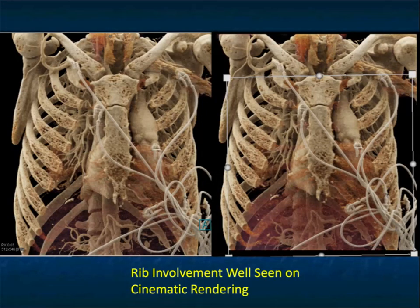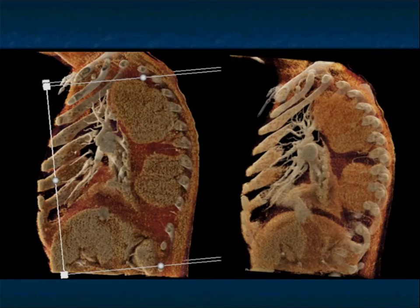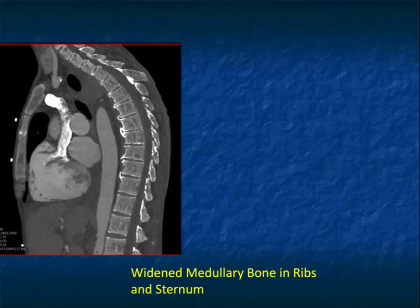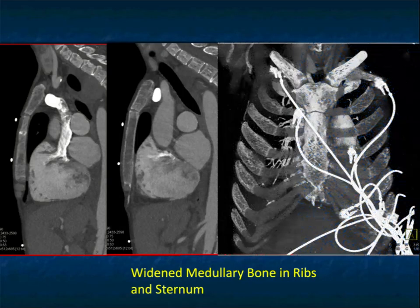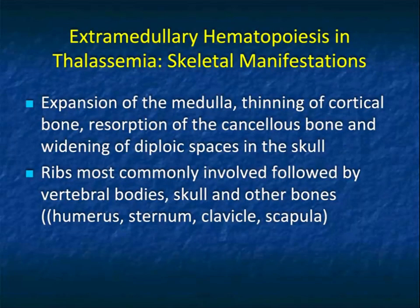Look at the sternum and ribs — you see a mottled appearance. The marrow is expanded and the cortices are thinned, giving a grainy appearance. Look at the ribs bilaterally — in the massage view you can see rib involvement as well as large paraspinal components. Another set of images shows expansion of the marrow in the sternum and textural changes in the thoracic and cervical spine, involving all bony structures. The coarseness and expansion in the ribs is very nicely seen.